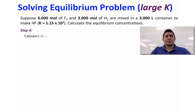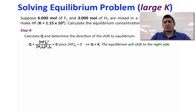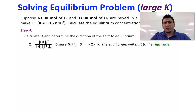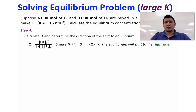In step 4, calculate Q and determine the direction of the equilibrium shift. In this case, we don't need to find Q because the concentration of HF is 0. So Q equals 0, which means Q is less than K, and therefore the equilibrium will shift to the right side.